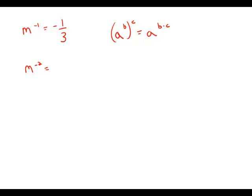And I mention this because I notice that this exponent, negative 1, if we multiply it by 2, we get that exponent. In other words, m to the negative 2 equals m to the negative 1 squared.